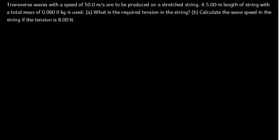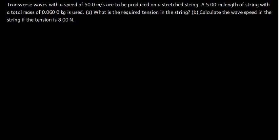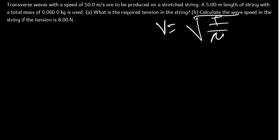Part B asks us to calculate the wave speed in the string if the tension is 8 N. Now, the wave speed on a string is given by the square root of the tension force divided by the linear density. Linear density is basically the mass per unit length — it is given by mass divided by length, and its SI unit is kg per meter.